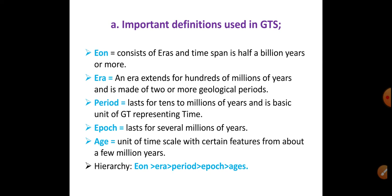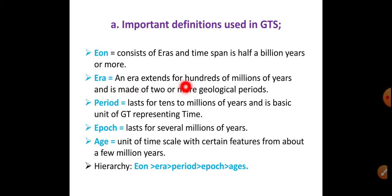Now, what are the important definitions in the geological time scale study? An Eon consists of two or more eras, and its time span is half a billion years or more.